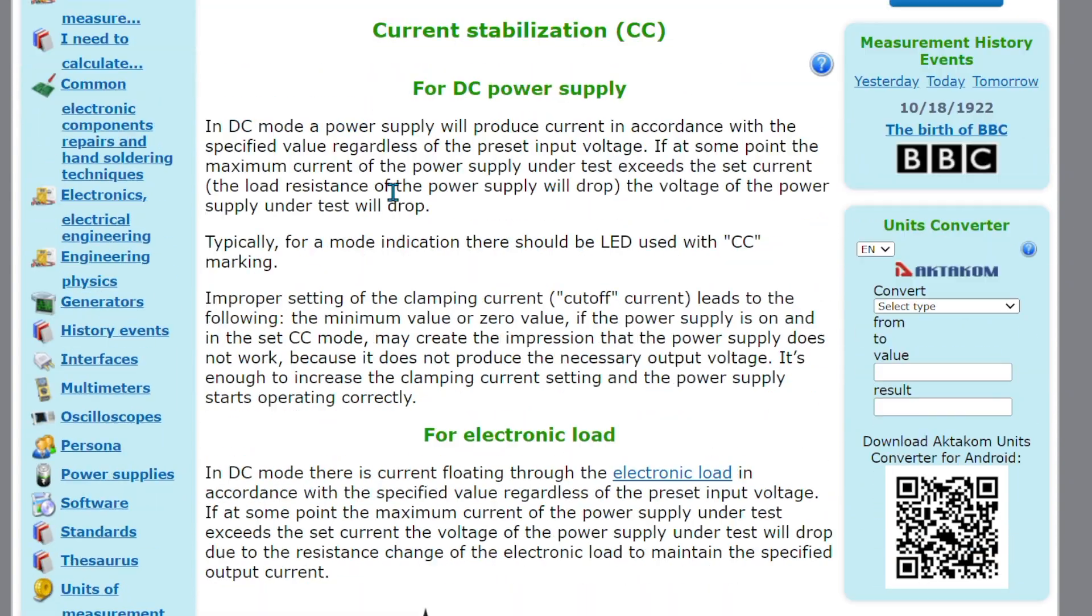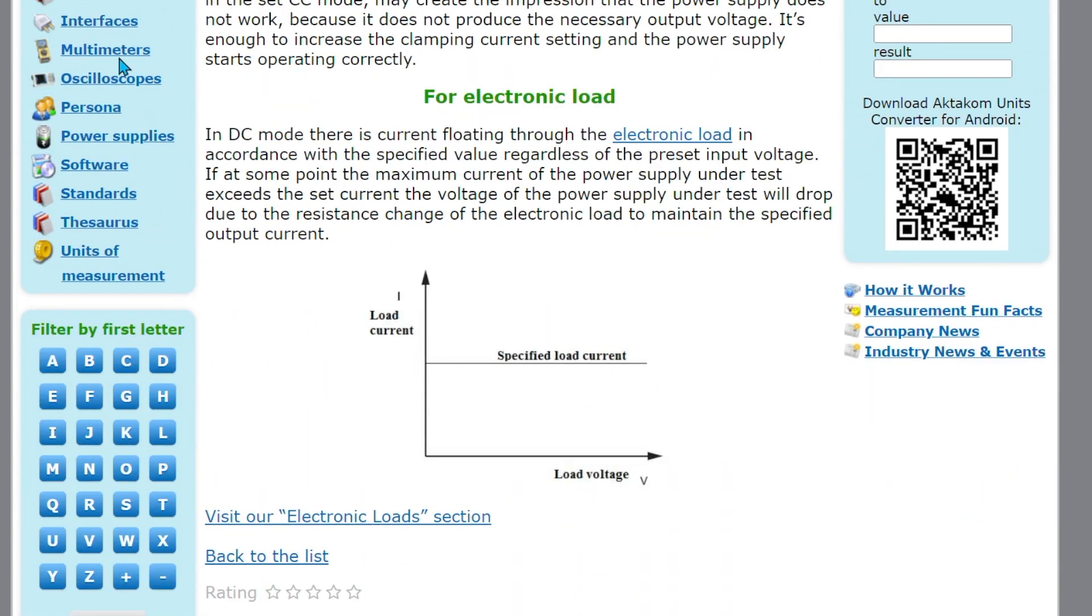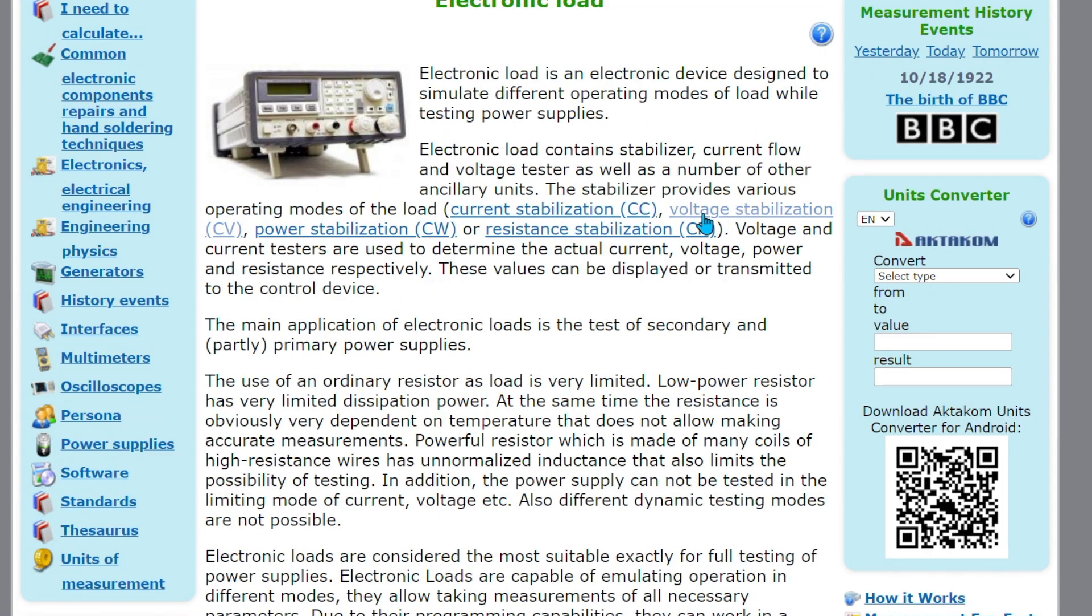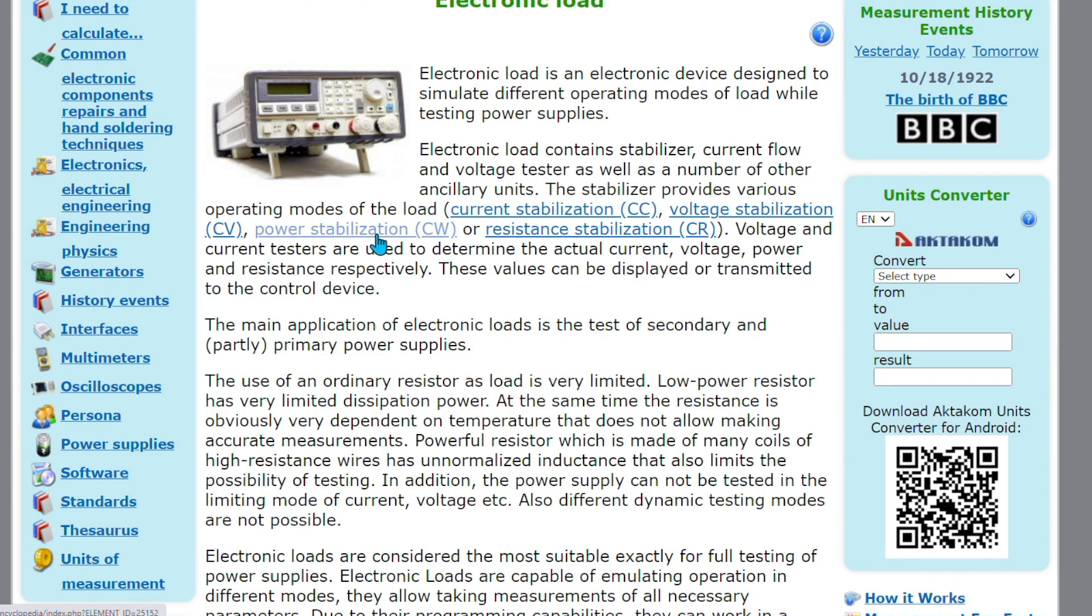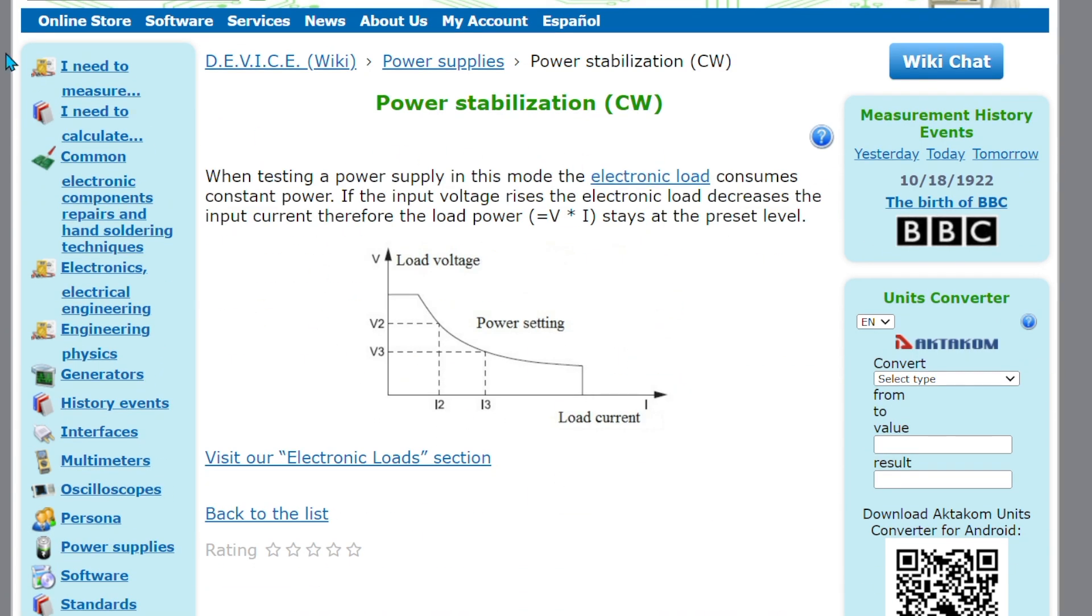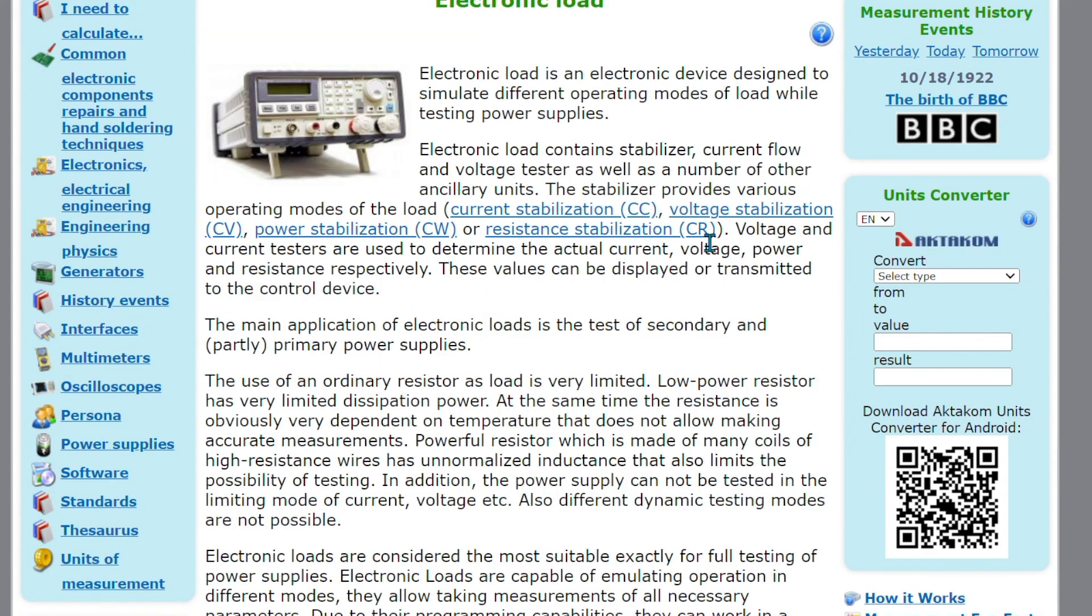The stabilizer provides various operating modes of the load: current stabilization CC, voltage stabilization CV, power stabilization CW or resistance stabilization CR.